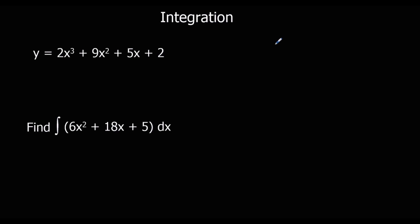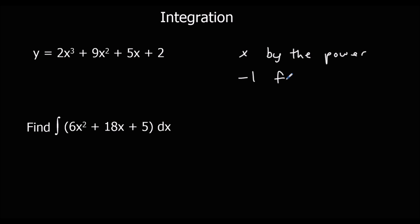Differentiating: we times by the power, and then we take 1 off the power. So this is the process for differentiation.